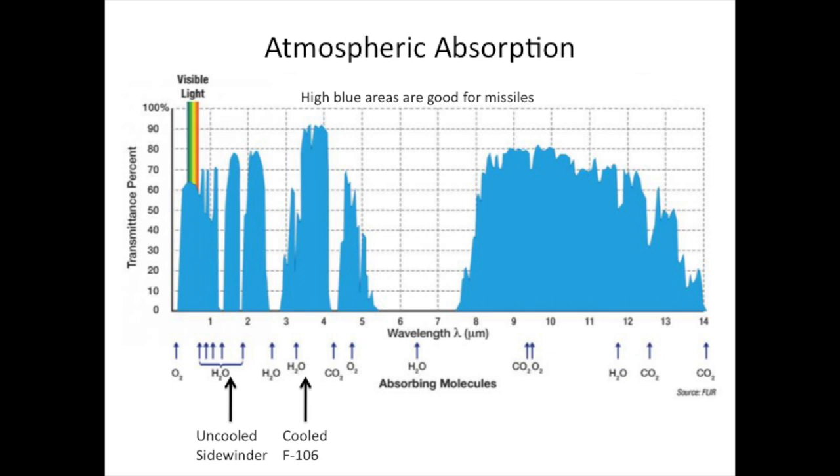The first vertical arrow on the left shows where the original Sidewinder's uncooled seeker head would track. There is still a lot of clutter in that area from natural sources, which made it poor for missile tracking. It would home in on too many clouds and other things.